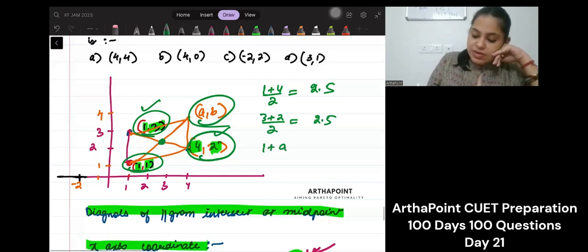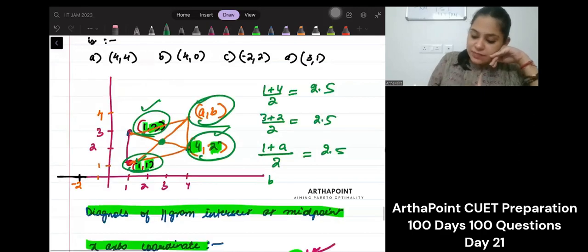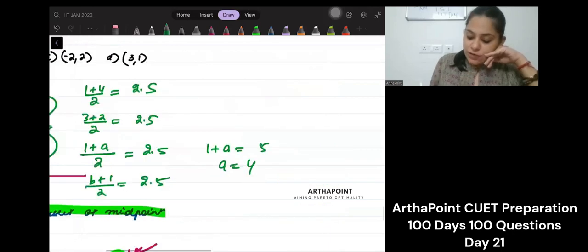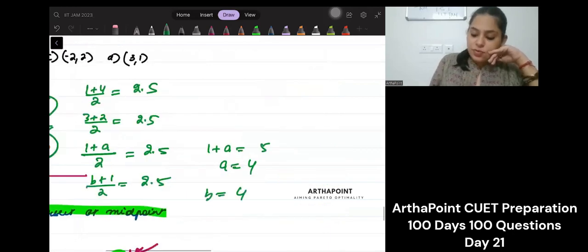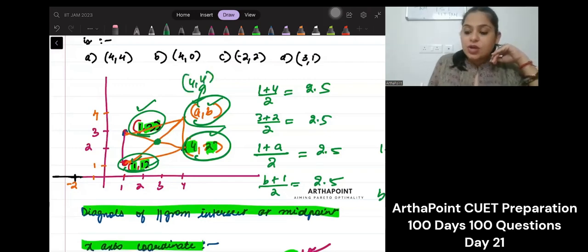In that case, I would have wanted that (a+b)/2 would have been 2.5. So, I would have got that a, 1 plus a would have been 5. So, a would have been 4. And I would have got b plus 1 by 2 as 2.5. So, I would have got my b also as 4. In that case, I would have got this as (4,4). So, ideally speaking, this is correct. This is also correct.